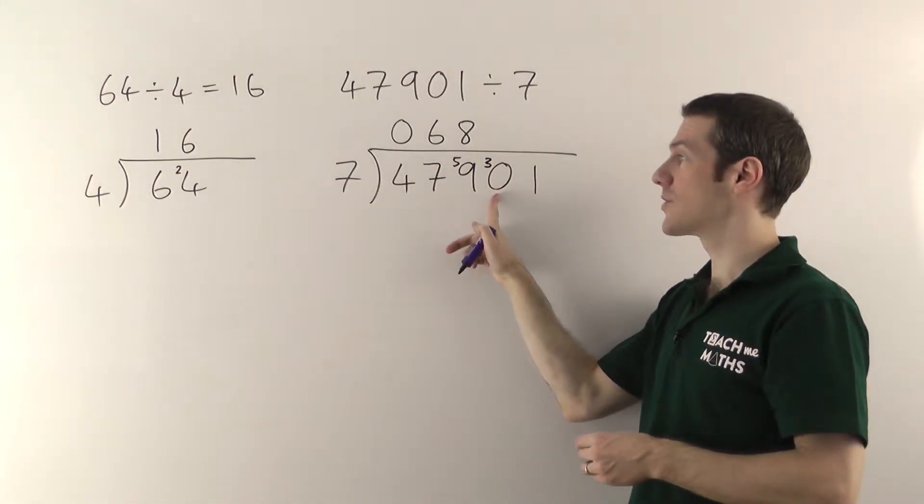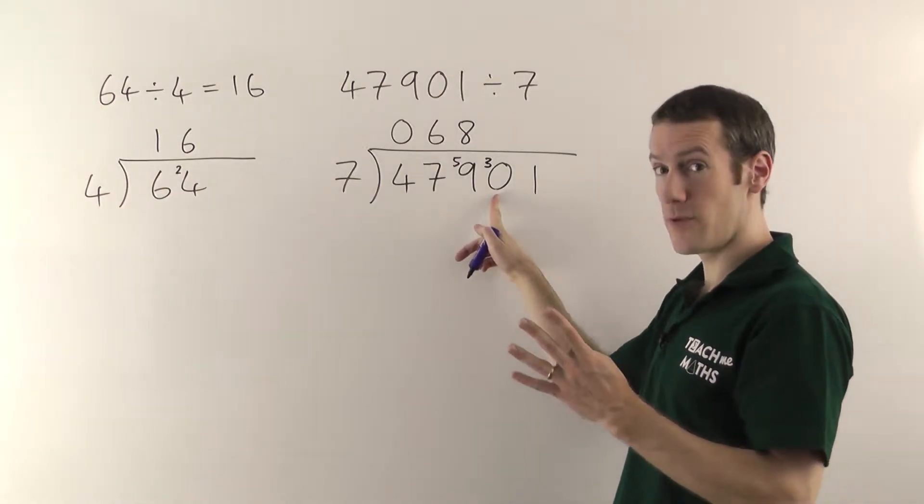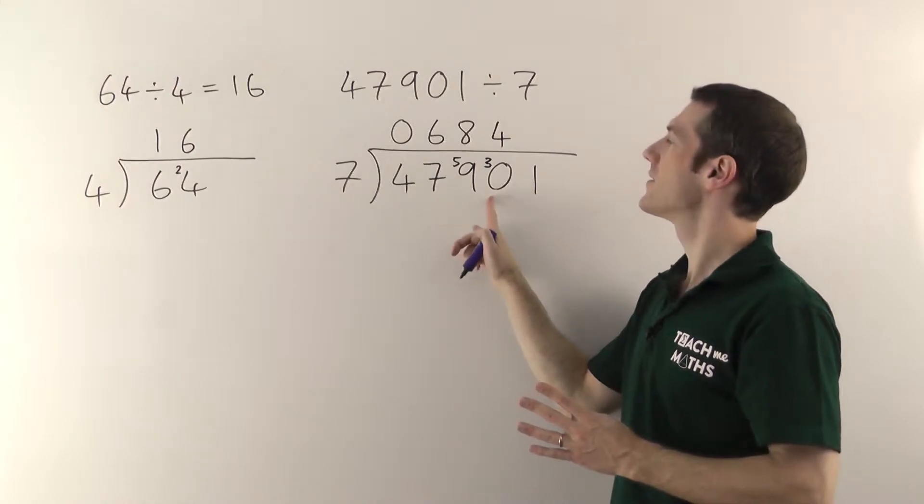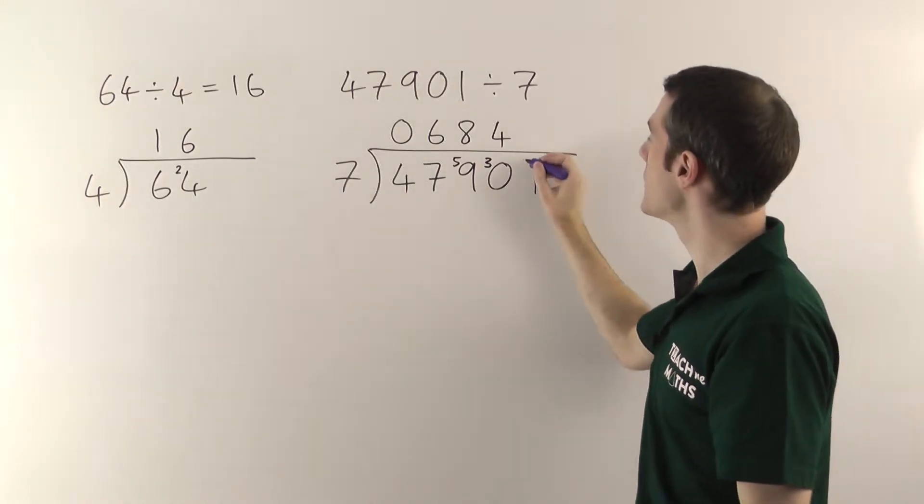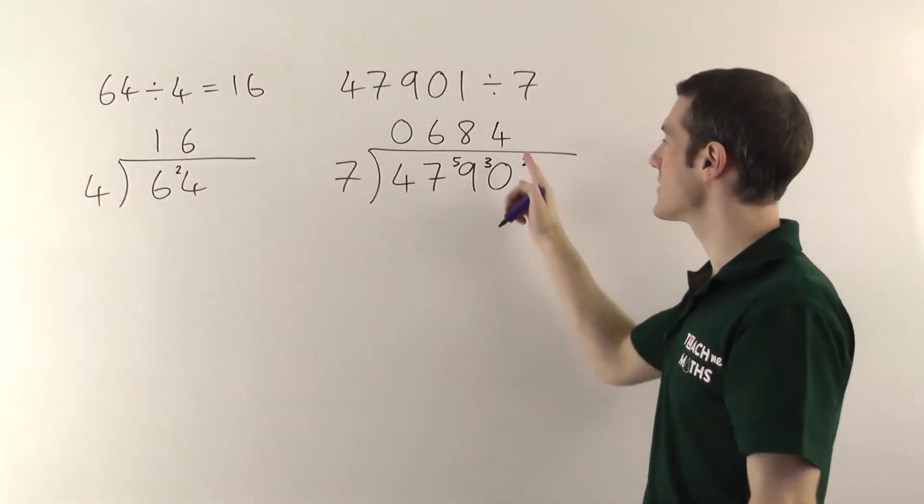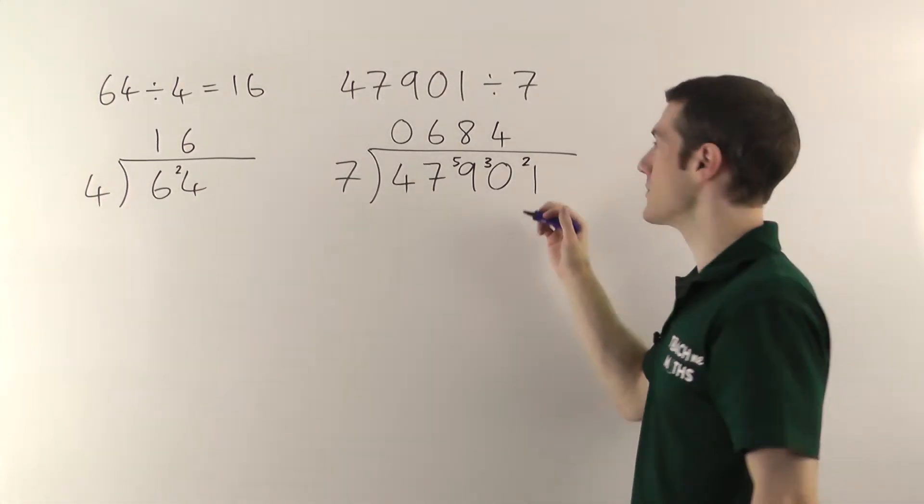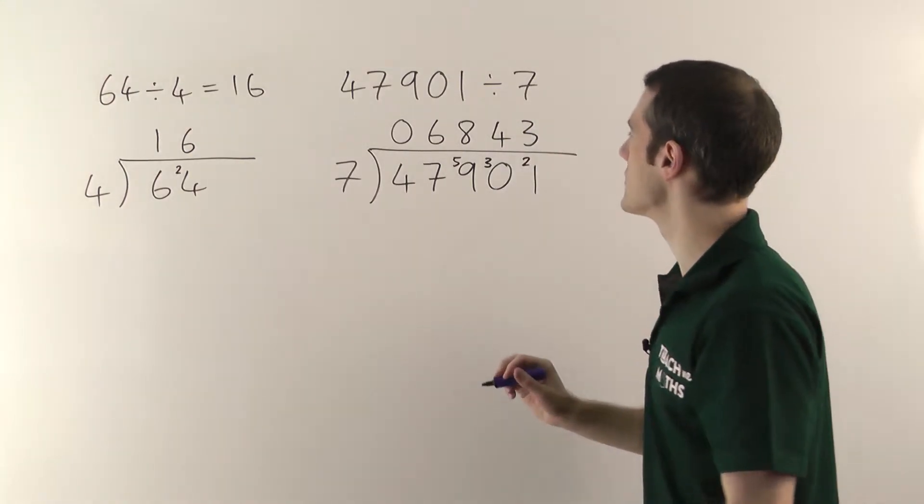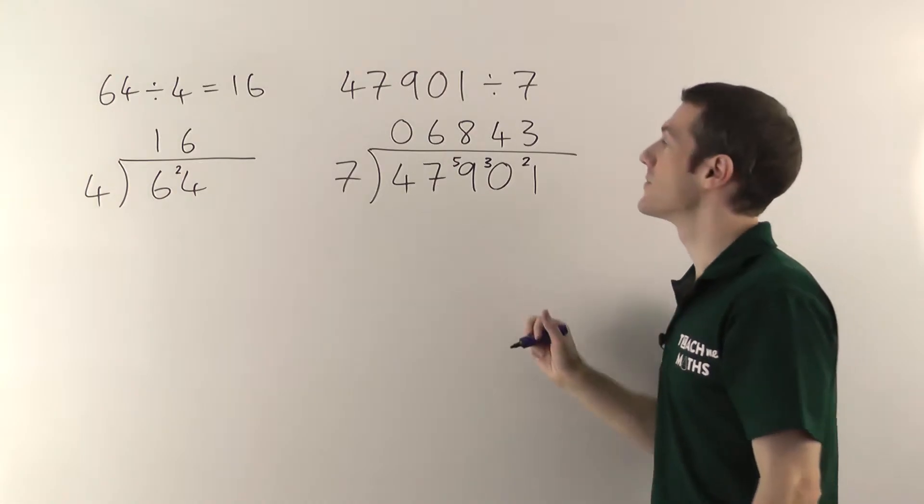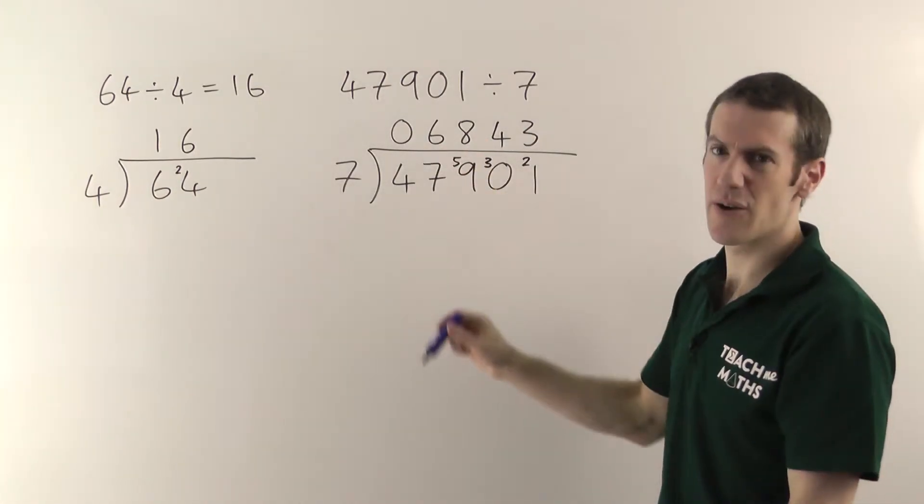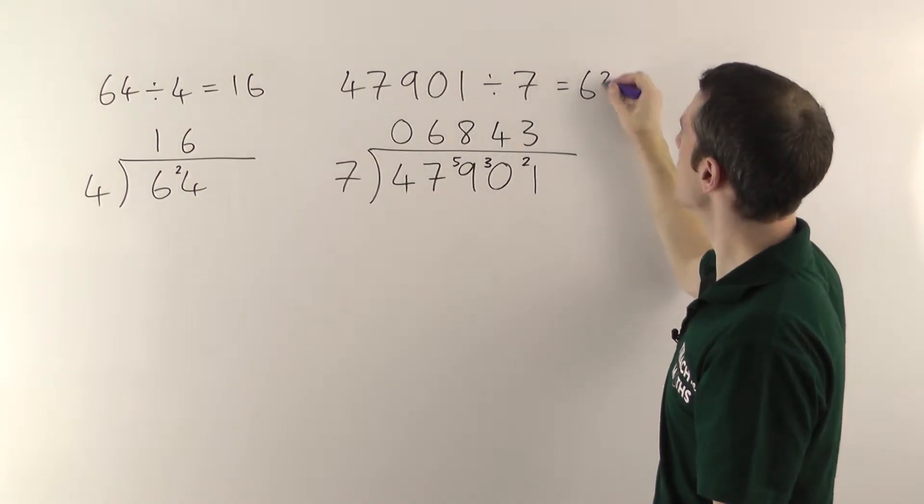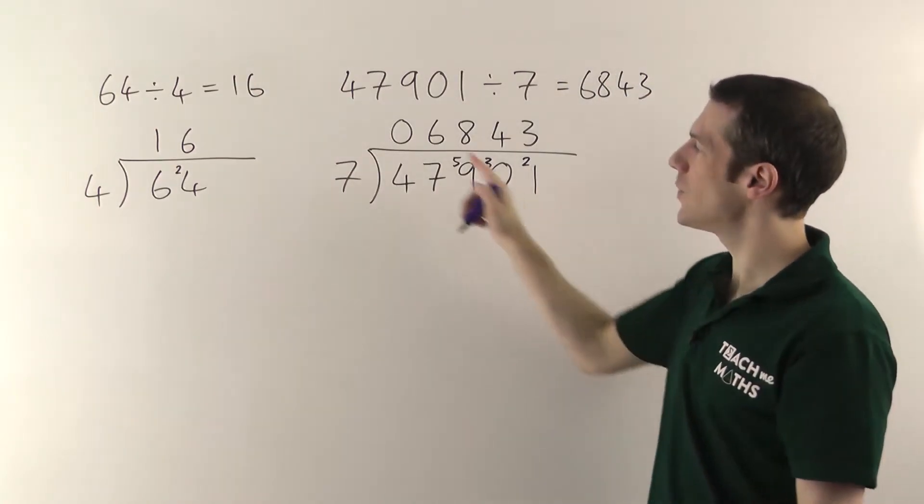7s into 30 will go 4 times, because 4 sevens are 28. So 28 up to 30 is a remainder of 2 this time. So you put your remainder there to make the 1 into a 21. And then finally, 7s into 21 goes 3 times, so that goes there. Now I've got no more remainder, no more digits. It's my final answer. You can ignore the 0 at the front. It's 6,843.